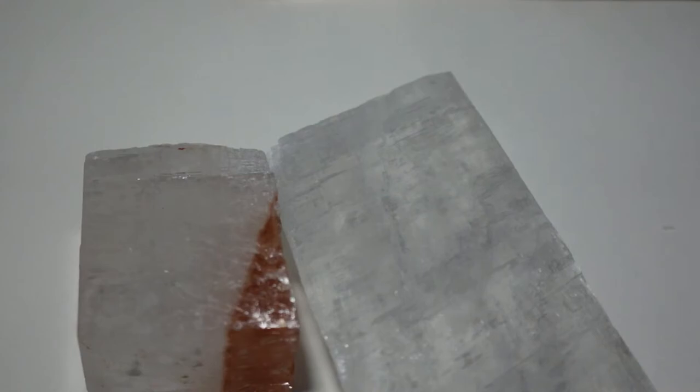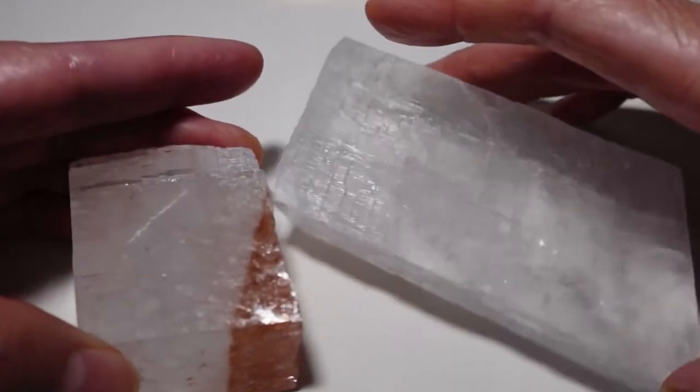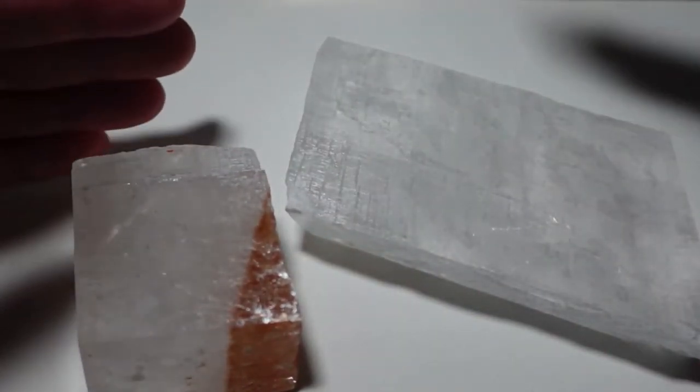Meaning of double refractions. It means that when you actually place a block of Iceland Spar on a text, for instance, what's going to happen is that the word will actually appear to be double. Or doubled. Well, what I mean by that is that it's going to form into some kind of a double vision. Or double text.